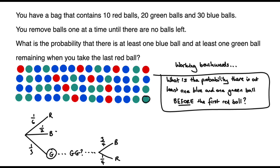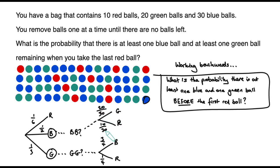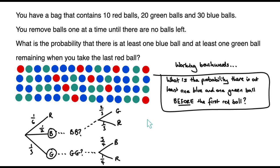Similarly, if the first ball is blue, we might get more blue balls before seeing a green or red, but all we care about is whether the next non-blue ball is green or red. The probability we see a green ball before a red ball is 20 out of 20 plus 10, or 2/3. The probability we see a red ball before a green ball is 10 over 30, or 1/3. Of course, if we get a red ball first, that's game over, so we don't need to consider that path.